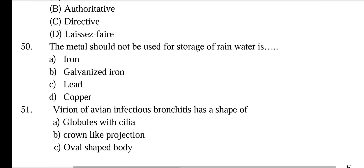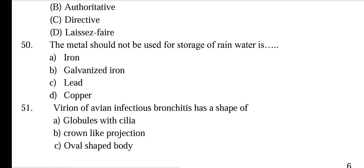The metal that should not be used for storage of rainwater — options: iron, galvanized iron, lead, and copper. The metal that should not be used for rainwater storage is lead and copper. Thank you.